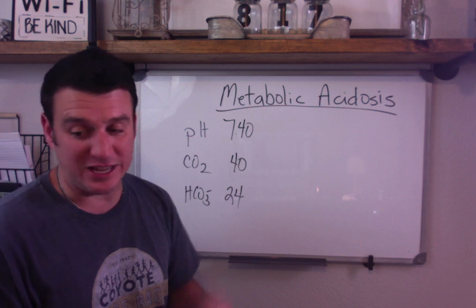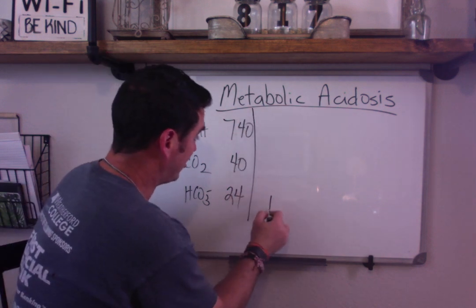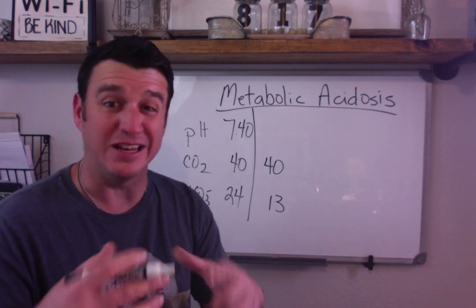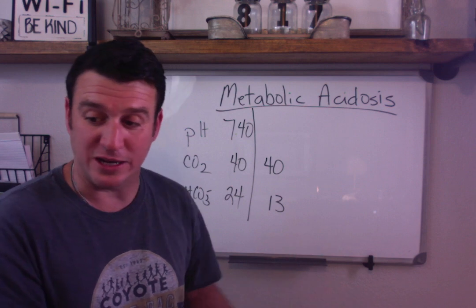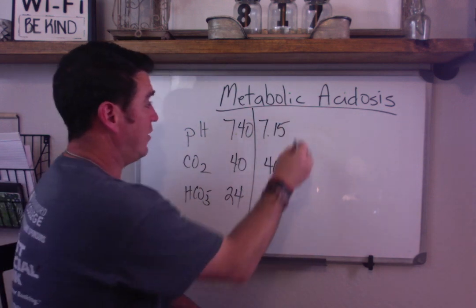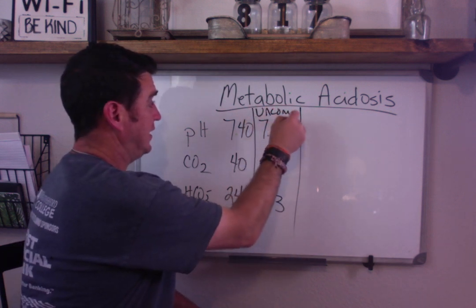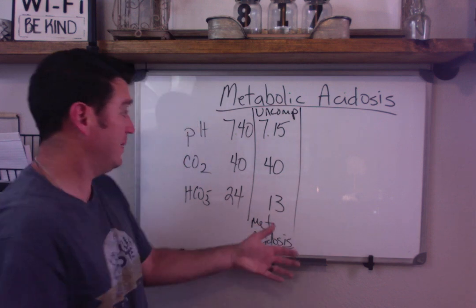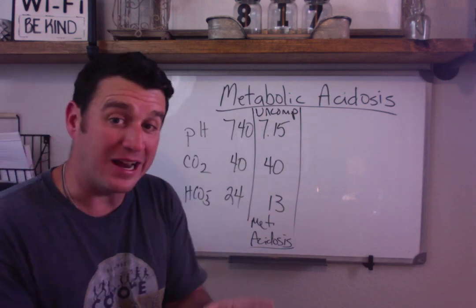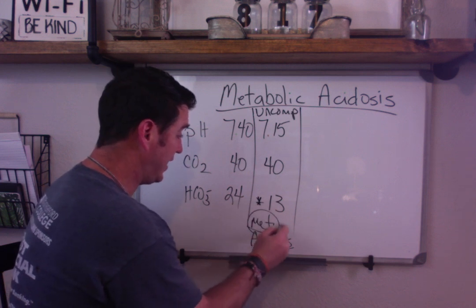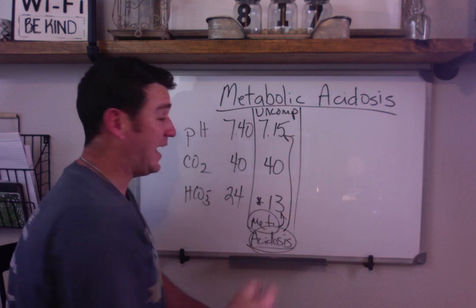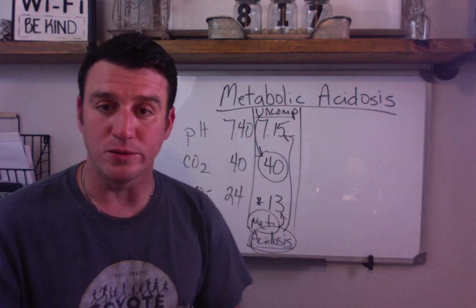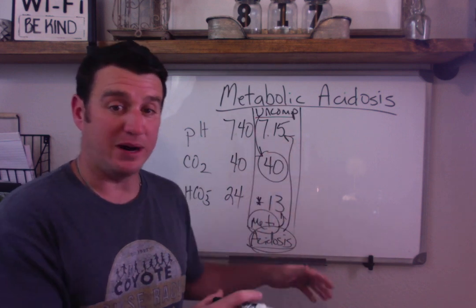So let's say you have a bicarb of 13. Your CO2 initially stays normal — this is part of the compensatory mechanism, but in the initial phases your CO2 stays normal until your pH goes acidotic, and your pH is 7.15. This is an uncompensated metabolic acidosis. It's metabolic because the low bicarb is the problem causer, it's an acidosis because we're on the acidotic side of the pH, and it's uncompensated because our CO2 is still normal.